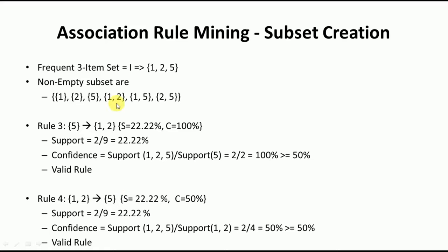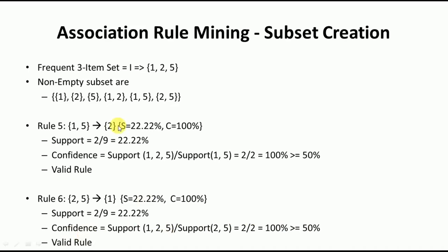If S = {1,2}, remaining is {5}: confidence = 50%, equal to minimum confidence — valid rule. If S = {1,5}, remaining is {2}: confidence = 100% — valid rule. If S = {2,5}, remaining is {1}: confidence = 100% — valid rule, since it is more than the minimum confidence.